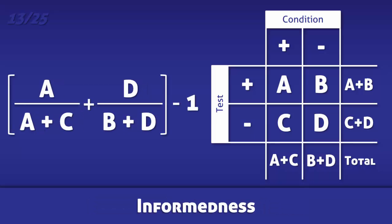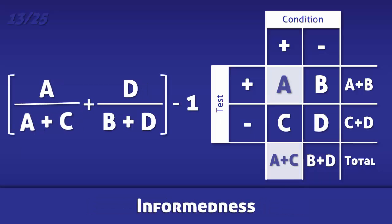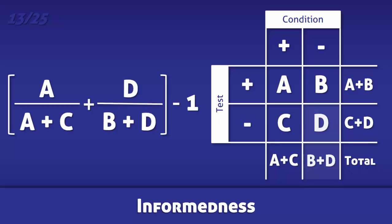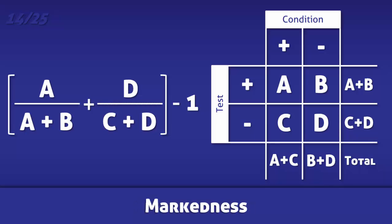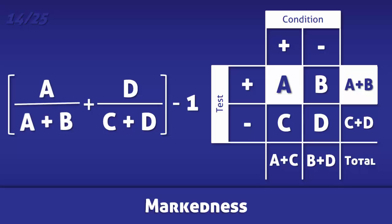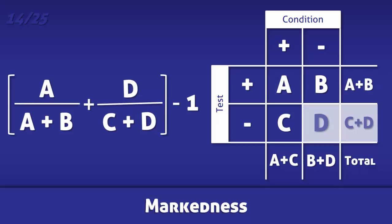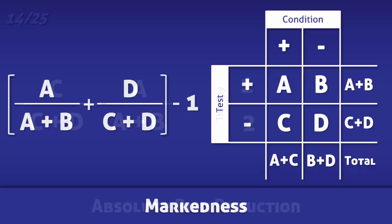For informedness, subtract 1 from the sum of the sensitivity and the specificity. For markedness, subtract 1 from the sum of the positive predictive value and the negative predictive value.